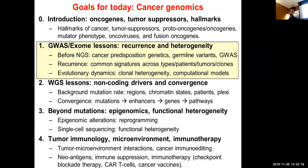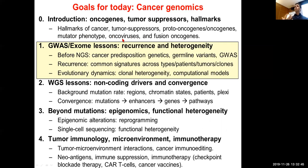So the lay of the land: hallmarks of cancer, tumor suppressors, proto-oncogenes becoming oncogenes when mutated, and the mutator phenotype where disrupting repair machinery causes genomic havoc. Some of this havoc is launched by oncoviruses — viral infections that insert into the genome and if they insert in the wrong place can disrupt DNA repair machinery, inadvertently causing cancer.